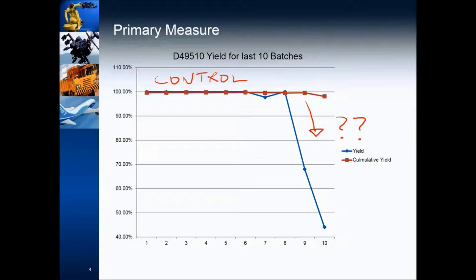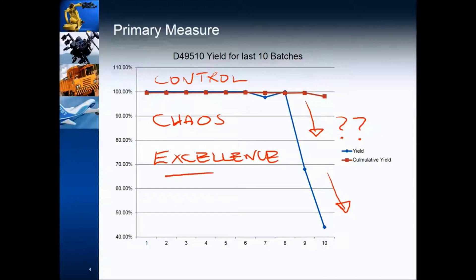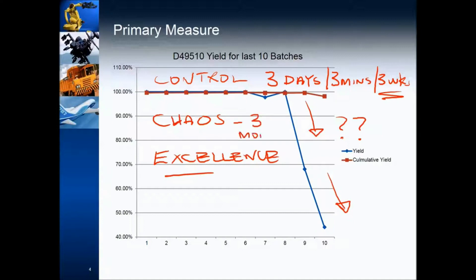When you look at graphs, you're asking: is my problem chaos, is my problem control, or do I want to go to excellence? If you know whether you're in chaos, control, or excellence — typically if you're in control, this problem is going to take three days, three minutes, three weeks — maybe — the fix is going to be short term. If you're in chaos, three months minimum. You have to know what type of problem you have before you start. Here is another great example: we are in control, something's happened — what is it?